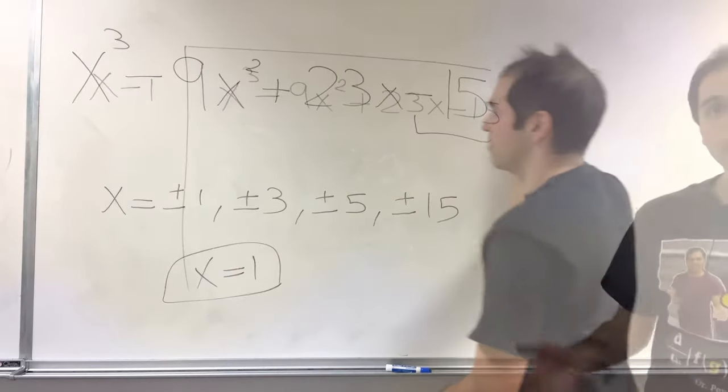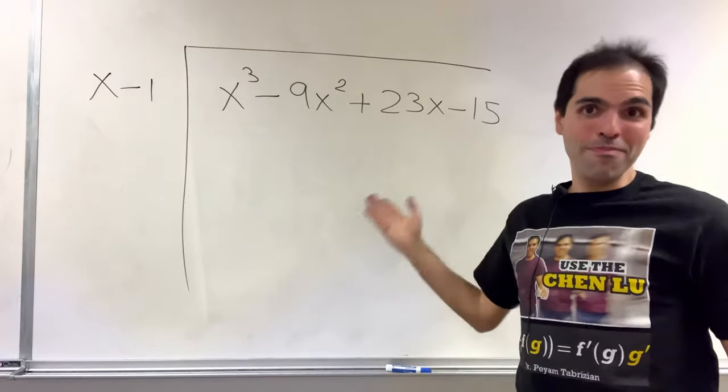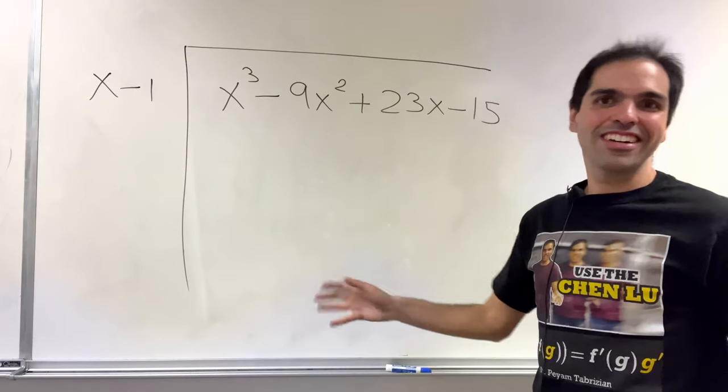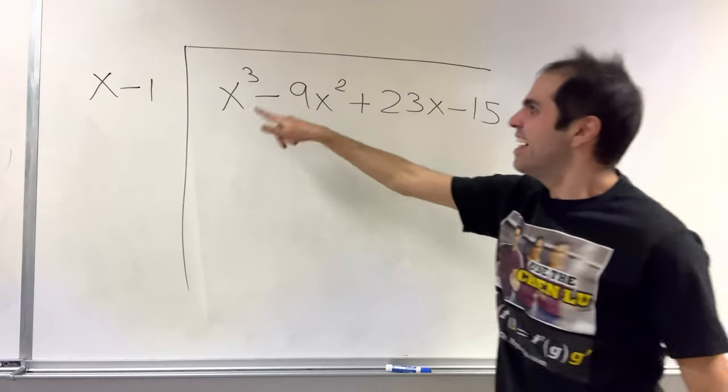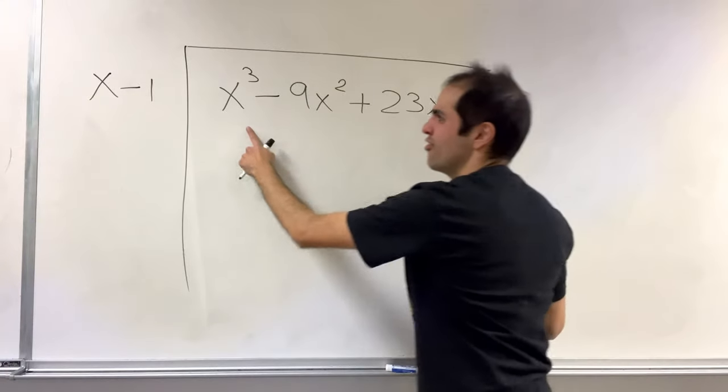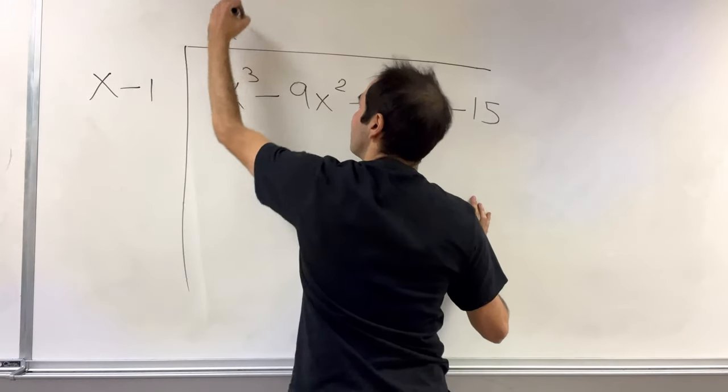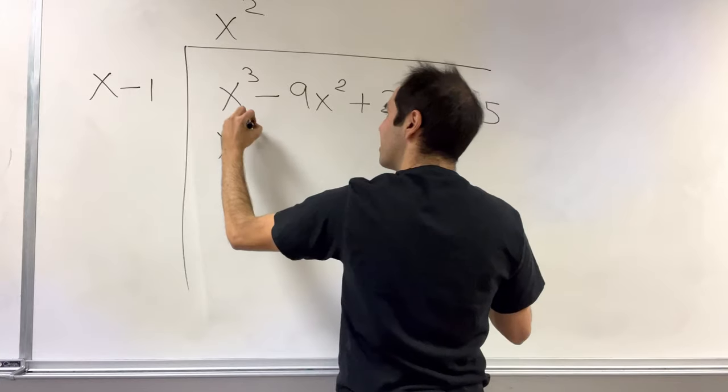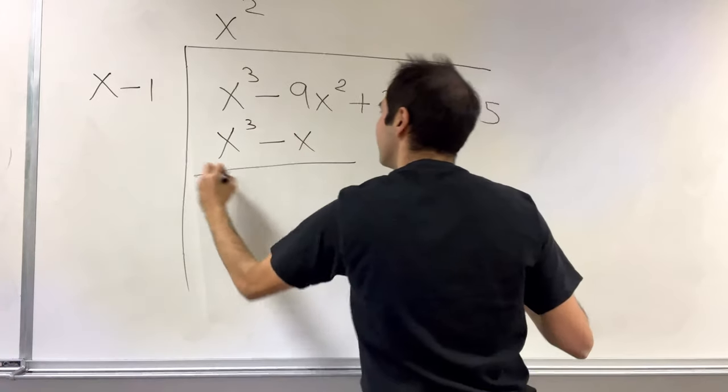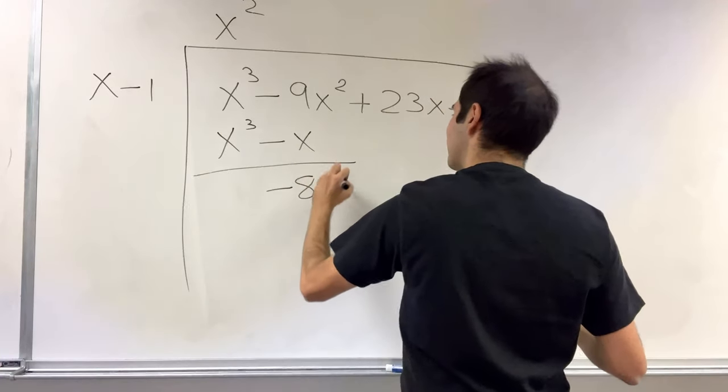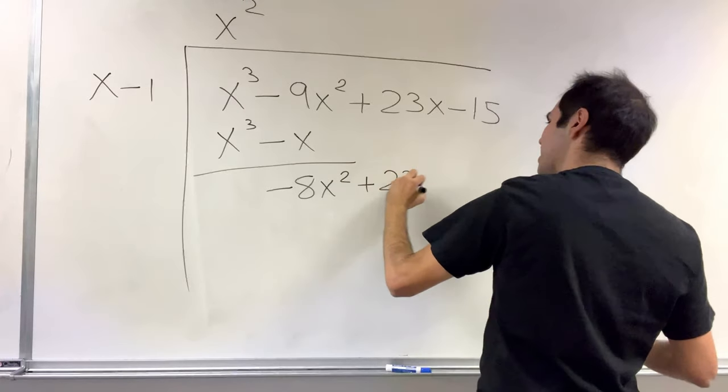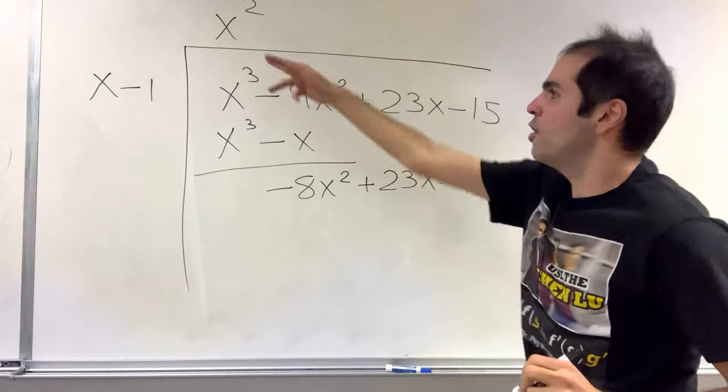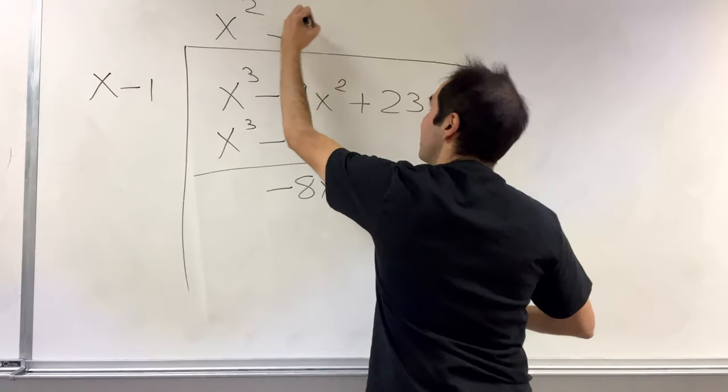So if you apply American long division, because for the French one you always run out of space, then what you get is you first multiply x minus 1 by x squared to get x cubed minus x squared, and you get minus 8x squared plus 23x minus 15.